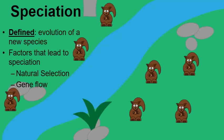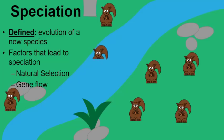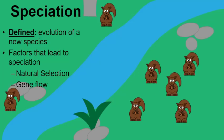A second factor is gene flow, which can be thought of as migration. Here we have a river separating two populations of squirrels, but if one squirrel is able to swim across and encounter the population on the other side and breed, this new squirrel has brought genes from one area to the next — this is called gene flow, and we'll talk more about this in a little bit.